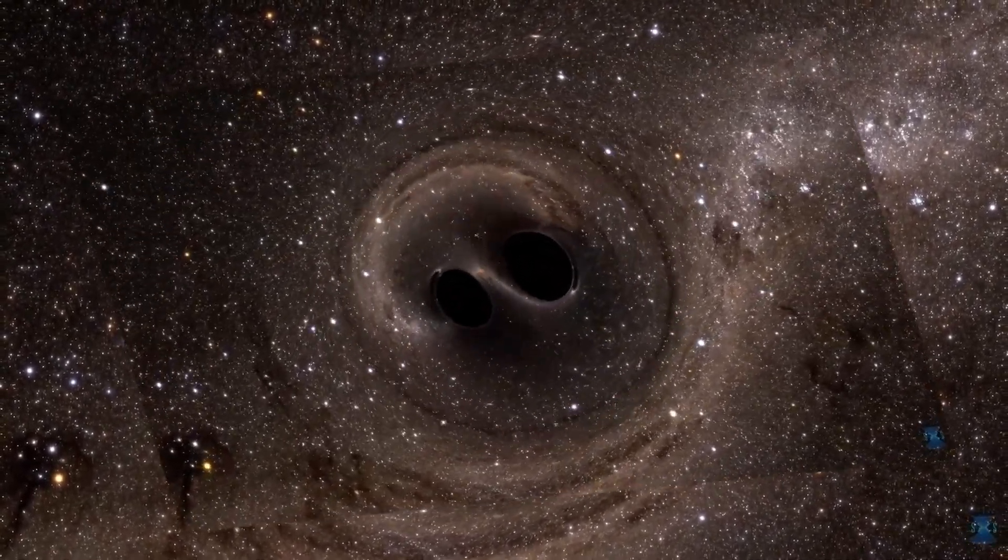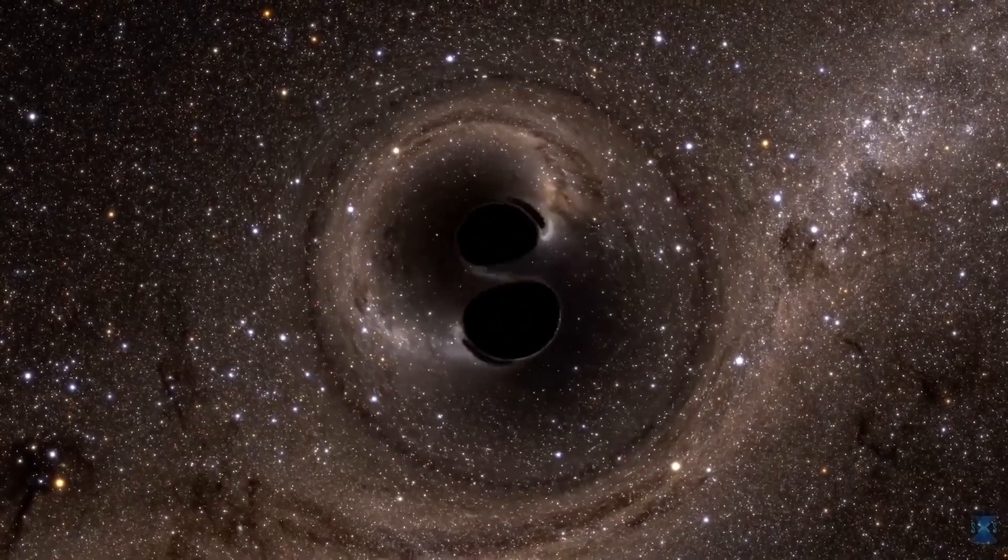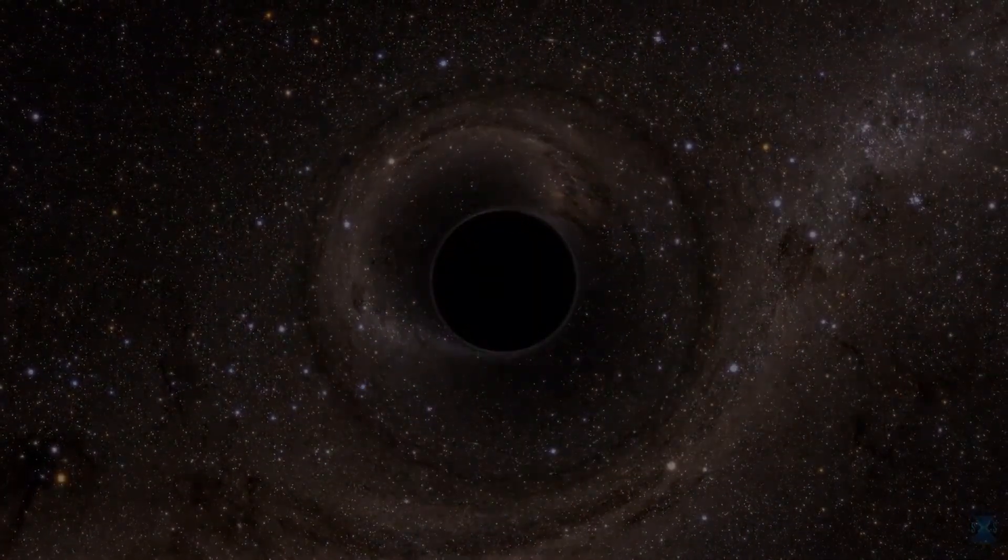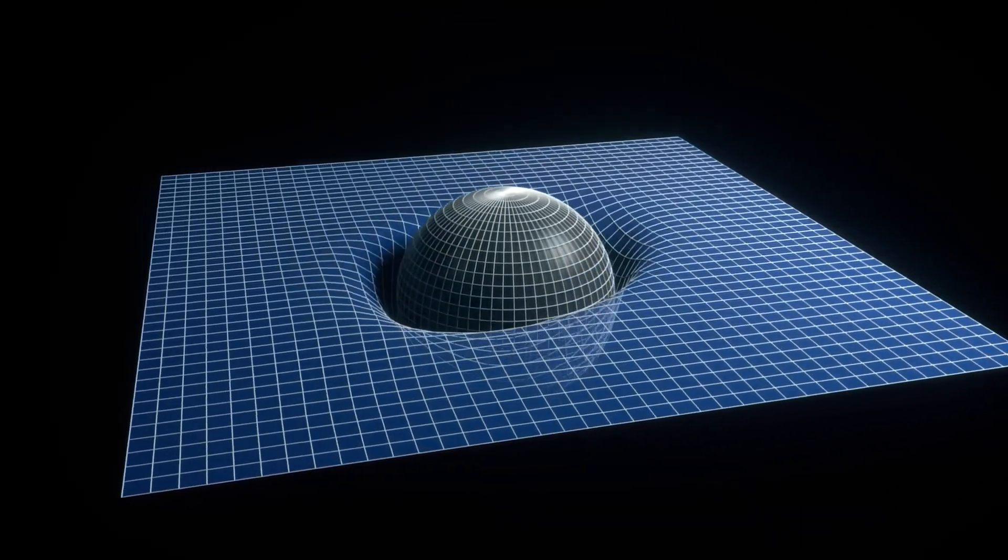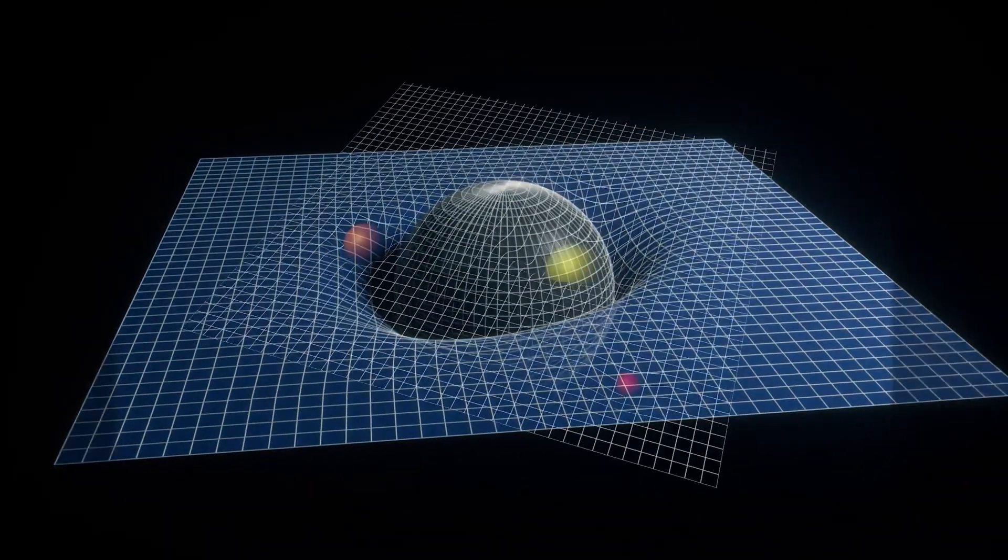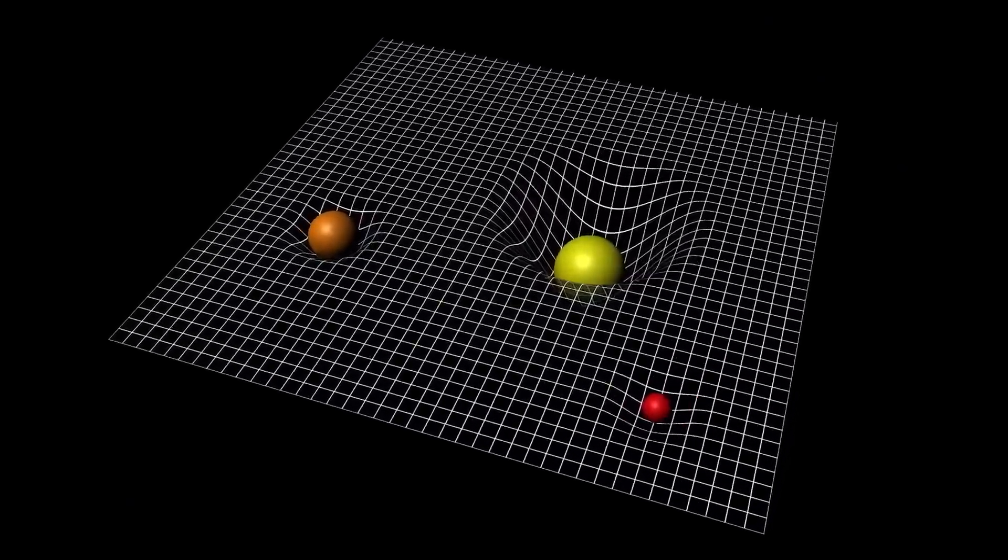So, how does LIGO work? It consists of two colossal L-shaped interferometers, each composed of two perpendicular arms several kilometers long. These arms house highly sensitive mirrors that bounce laser light back and forth.